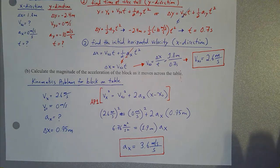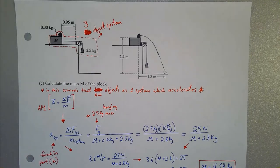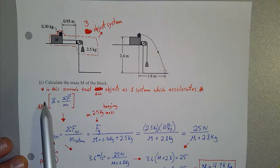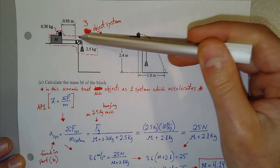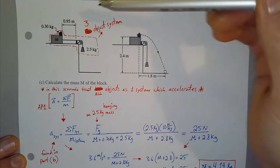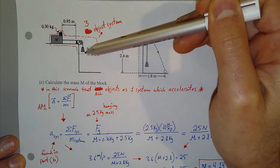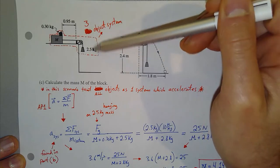Those two parts reviewed Unit 1 — one-dimensional and two-dimensional motion. Part C moves into Unit 2, dealing with forces and Newton's second law. The problem didn't give us the block's mass M; Part C asks us to calculate it. Anytime we have an object on a frictionless table connected by a string over a pulley to a hanging mass, we want to treat the whole thing as one system rather than separate objects.